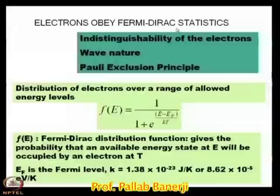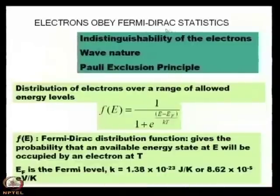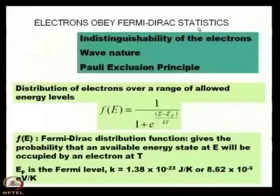Let us start another topic: Semiconductor Statistics. Electrons obey Fermi-Dirac statistics. This Fermi-Dirac statistics is one of several types. Bose-Einstein statistics is applicable for photons, then Maxwell-Boltzmann is applicable for gas molecules, classical particles, etcetera.